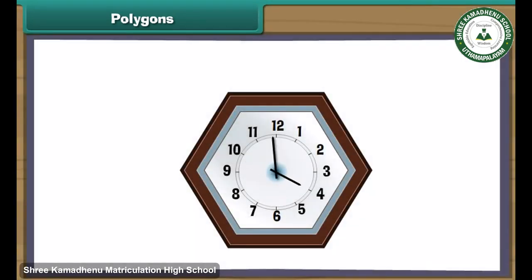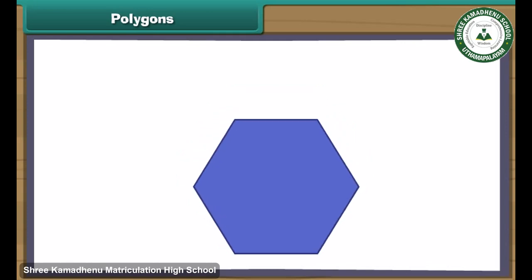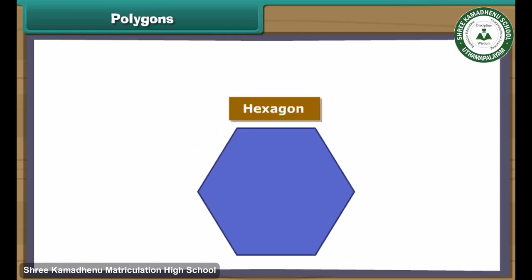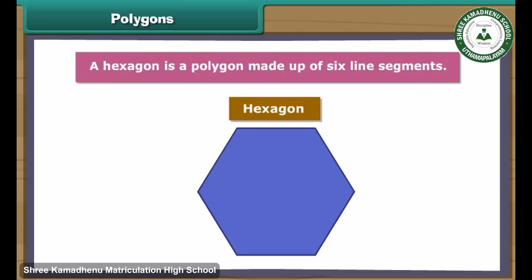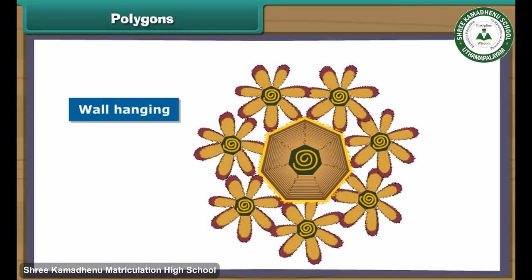Here is a clock. Let us draw its borders. We have a border of six line segments for the clock. A hexagon is a polygon made up of six line segments.